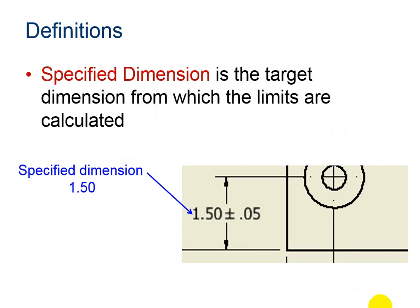The specified dimension is the target dimension, the exact dimension that we would like to have, but we realize that not everything is going to come out exactly 1.5. So how much variation are we willing to accept and our parts still function correctly? So that is given by this tolerance to the side.